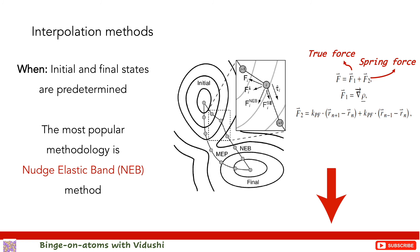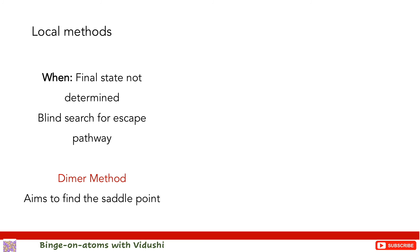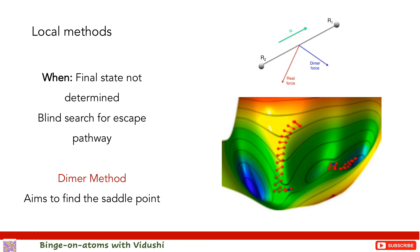For more adaptive processes where the next state is not known, is not predefined, and one may need to blindly explore the possible and most probable escape paths, local methods are preferred. One popular method is the dimer method, which allows users to search for a saddle point nearby. Here two identical images of the system with a constant distance between them are considered. Perpendicular to the dimer axis, the system is relaxed along the force. In the dimer axis, the system is relaxed against the force. The force acting on the center of the dimer gets modified and inverts the component, leading to minimization of forces that drives the dimer towards the saddle point.